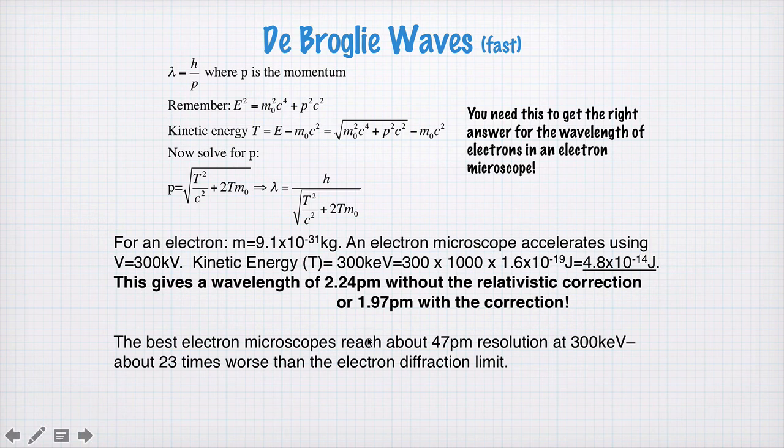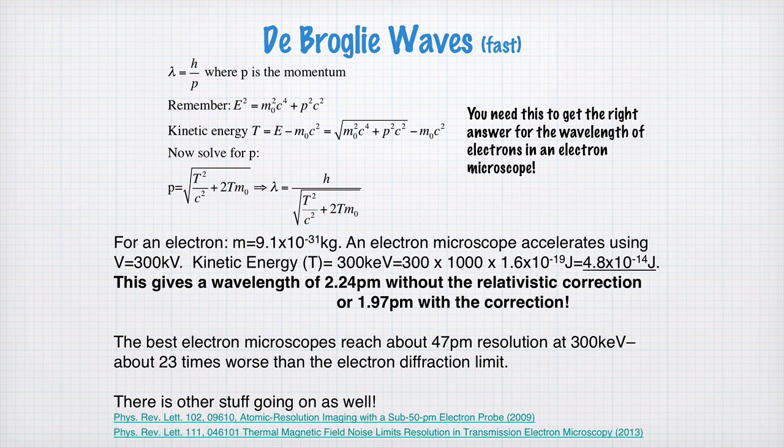Now the best electron microscopes reach about 47 picometers resolution at 300 kiloelectron volts. So that's about 23 times worse than the electron diffraction limit. So there are things that limit electron microscopy that aren't to do with electron diffraction. And here are a couple of fairly recent papers explaining some of the things that might be going on. It's to do with stray magnetic fields that disturb the path of the electron. So this is something that people might be able to fix.